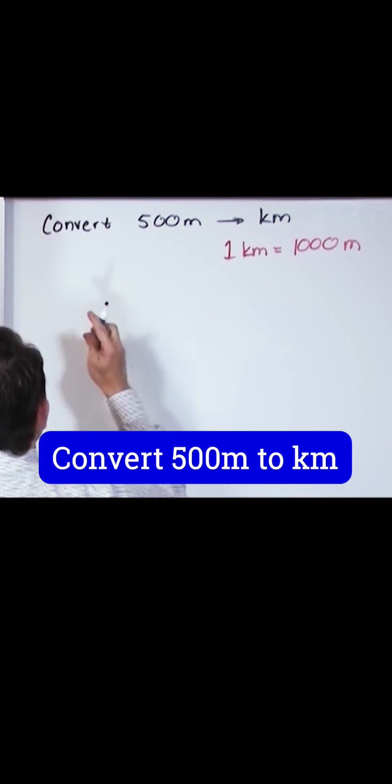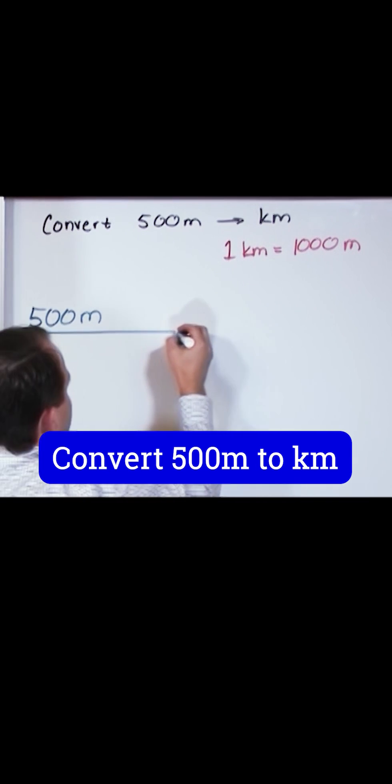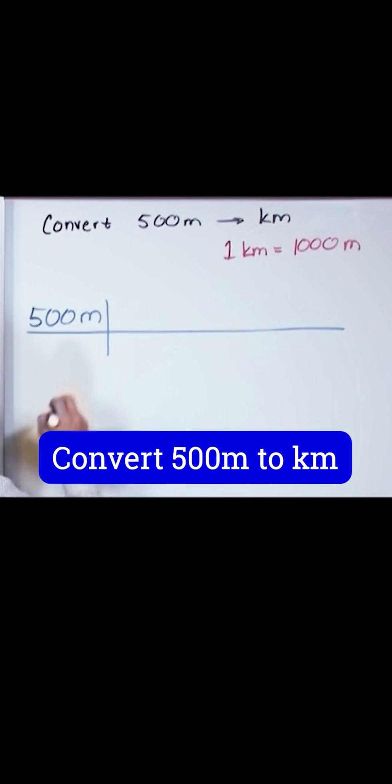First thing you do is write down what you know, 500 meters. You draw a horizontal line here and a vertical line here.